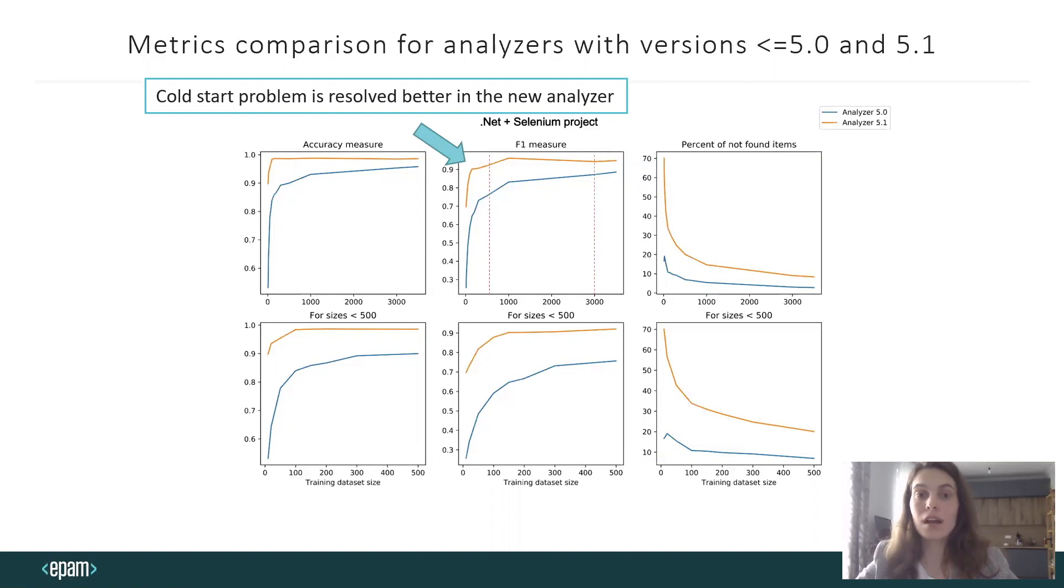We also have fewer false positive results, but at the same time, we have a bigger percent of not found items. But it is the problem of trade-off between precision and recall.